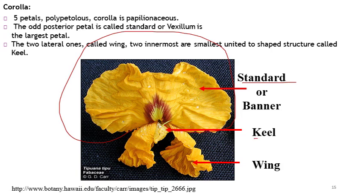The next petal type is the keel, also called the carina. These are the two anterior-most petals and they fuse to form a boat-shaped structure. The last type is the wings; these are the two lateral free petals in the corolla of this family.